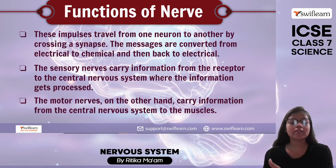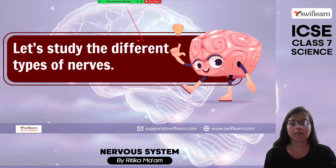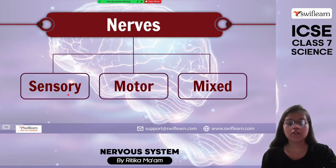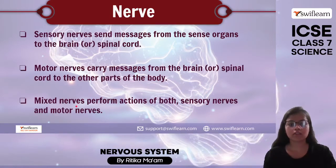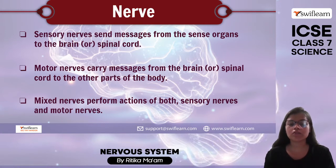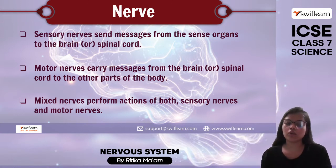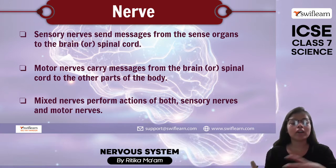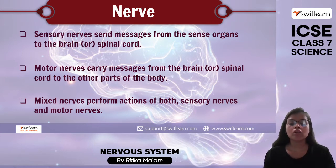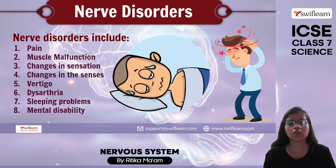We have different types of nerves: sensory, motor, and mixed. Sensory nerves send the message or signal from sense organs to the brain or spinal cord. Motor nerves carry the message from the brain or spinal cord to other parts of the body. Mixed nerves have both functions — they perform the function of sensory nerves as well as motor nerves.